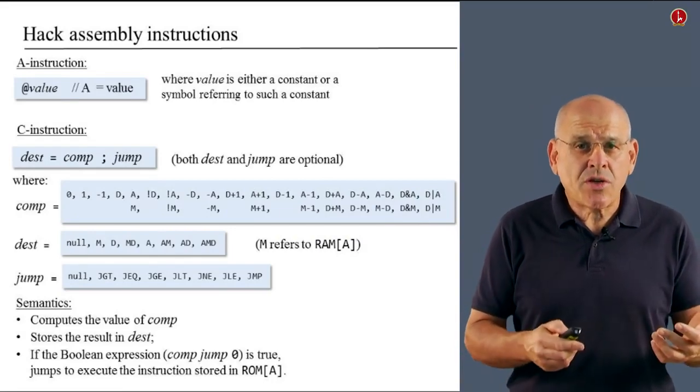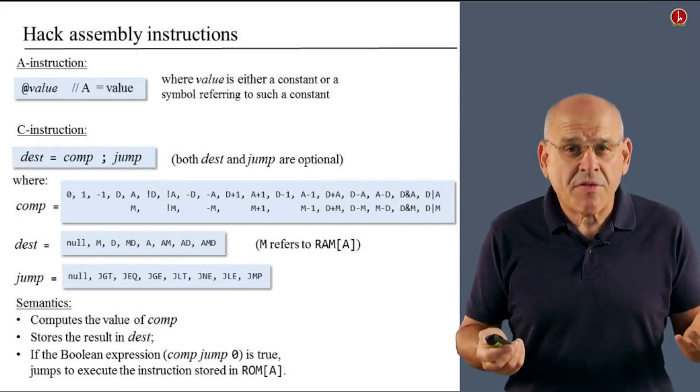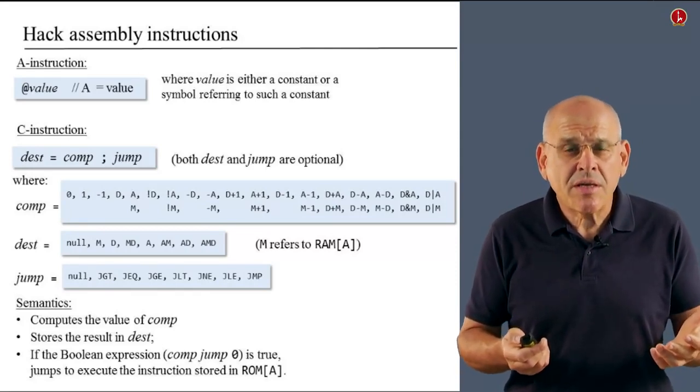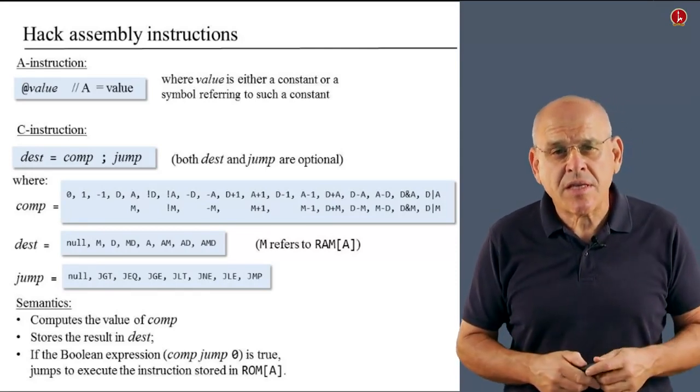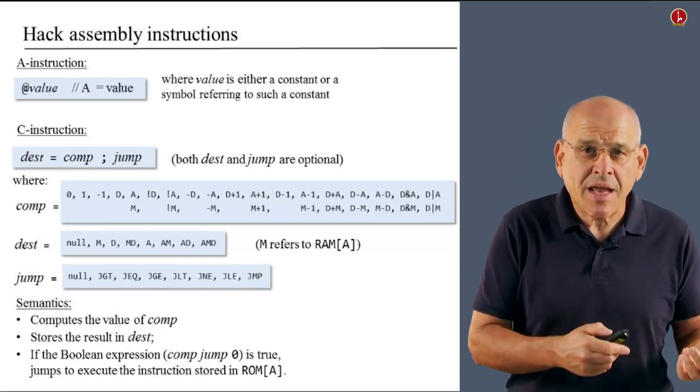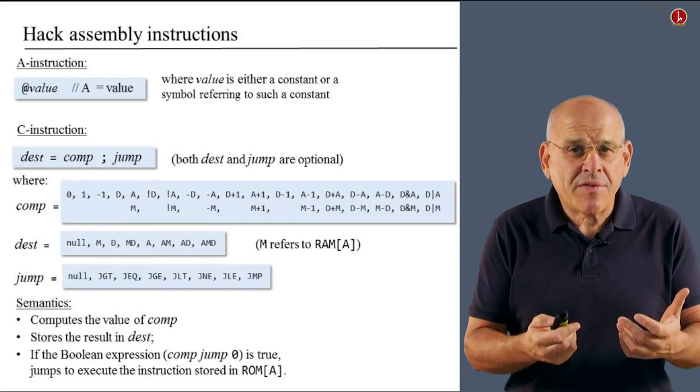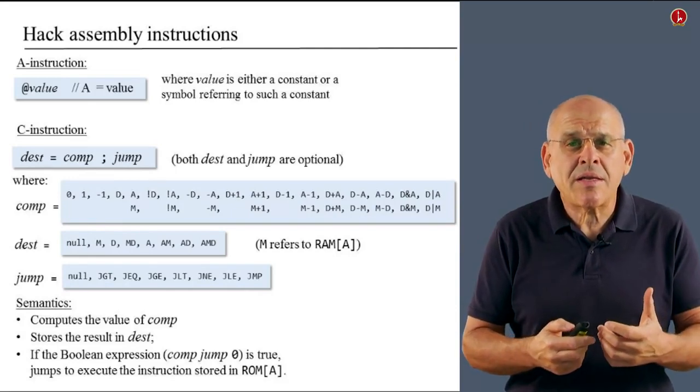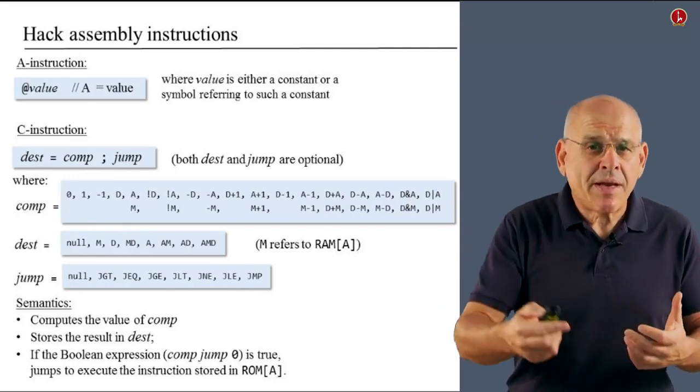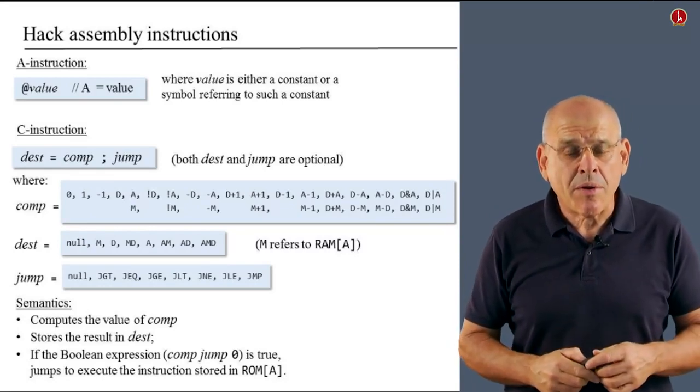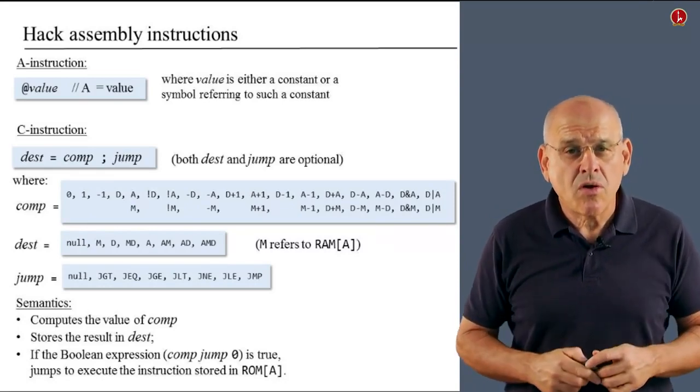And we have the C instruction, which is used to do three different things. We can compute a certain expression, we can store the value of this computation in some destination, and optionally, based on the value of this computation, we can decide to jump and execute something which exists in a different region of the program. We can perform a go-to operation.